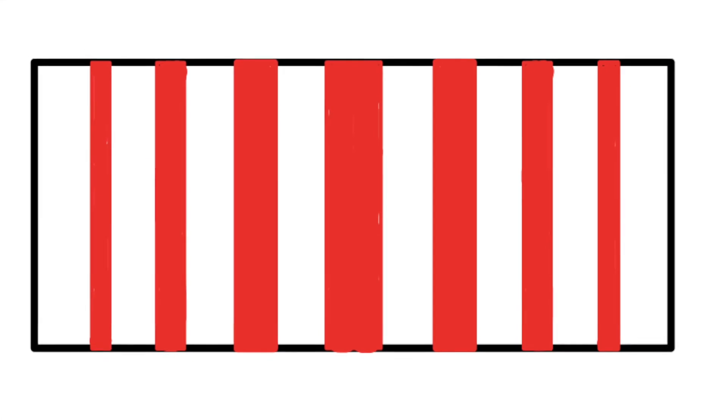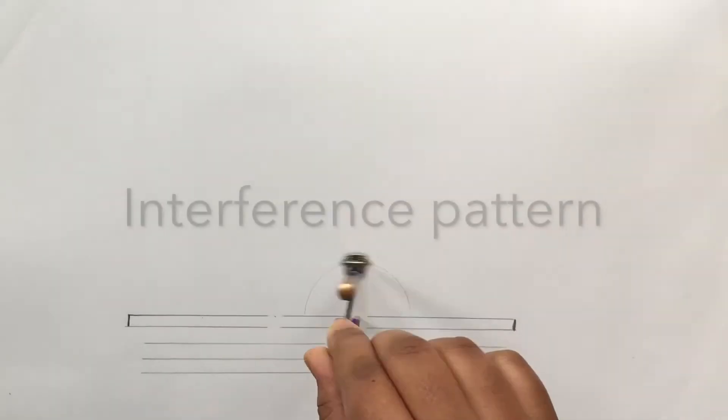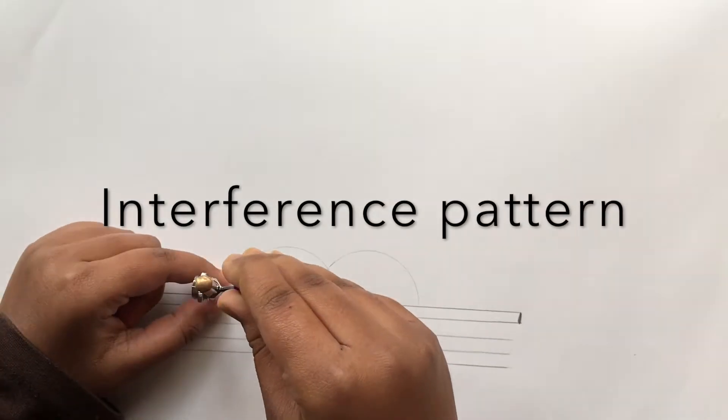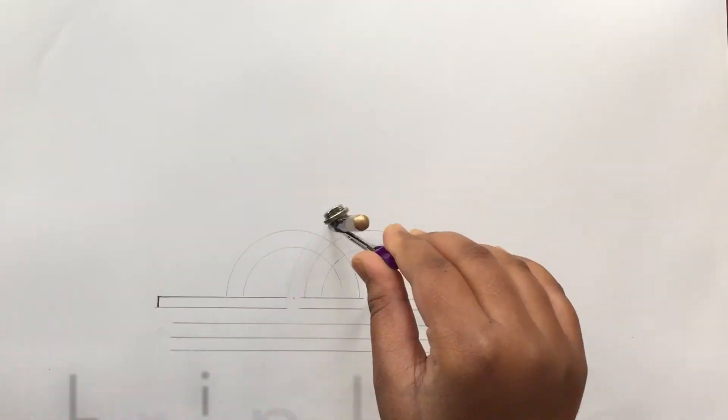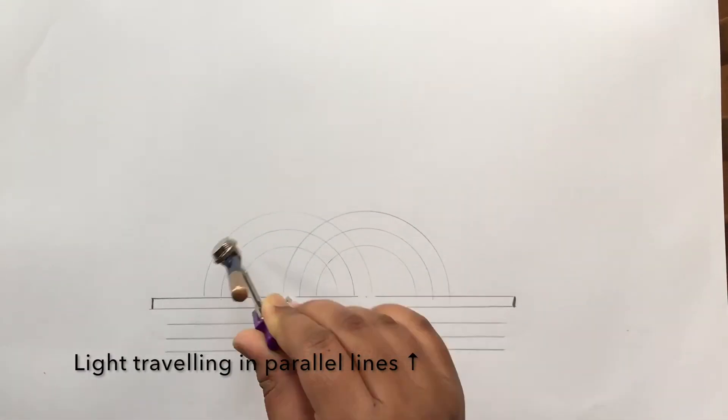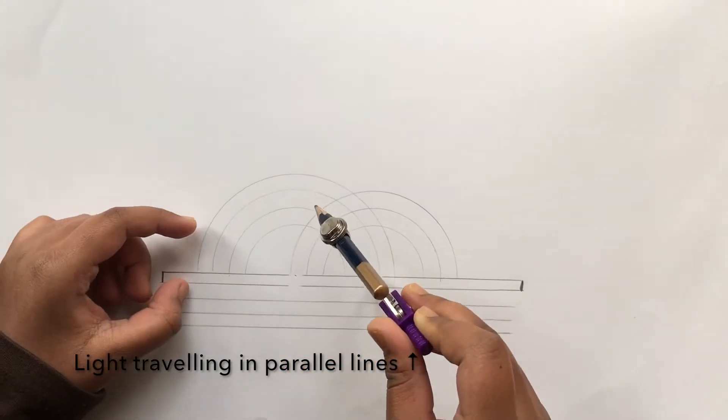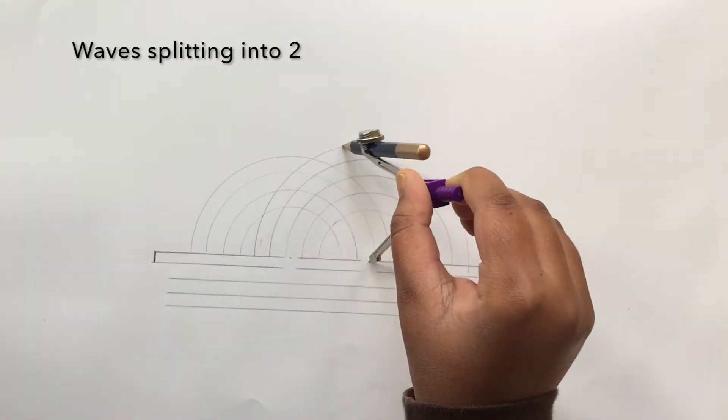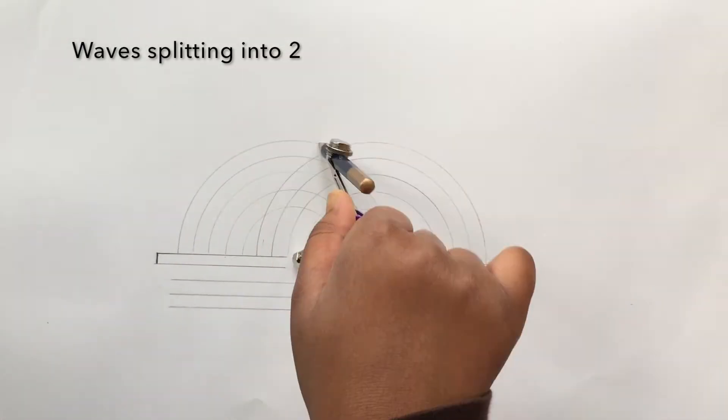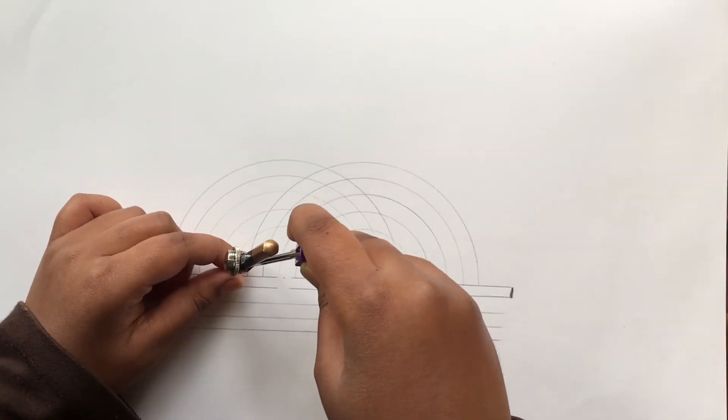This is called an interference pattern and it happens with waves. So light hits the slits traveling in parallel lines and the waves split into two and interact. This interaction of waves forms interference pattern.